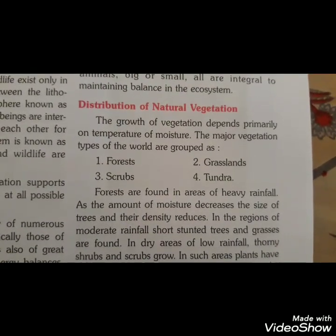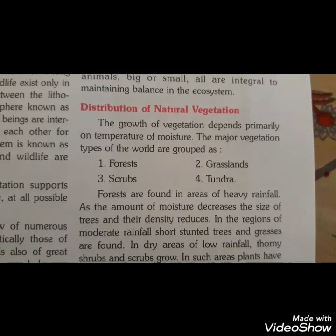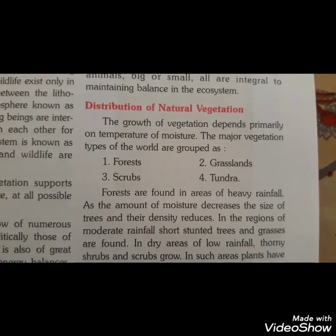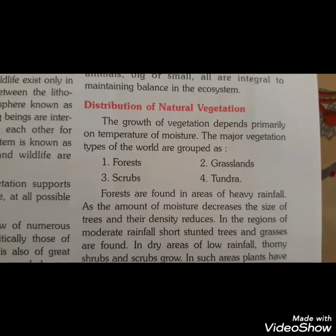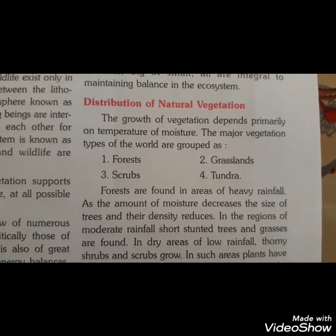Natural vegetation को temperature और moisture के according four parts में divide किया गया है — forest, grassland, scrub and tundra।